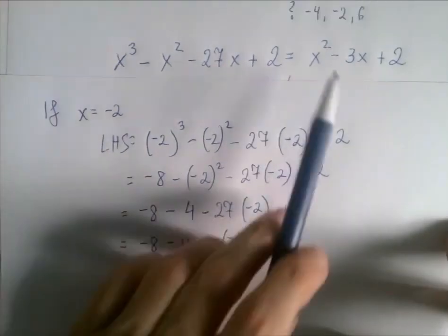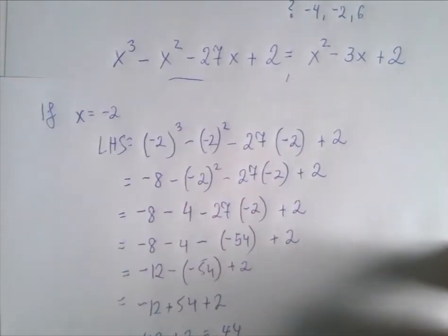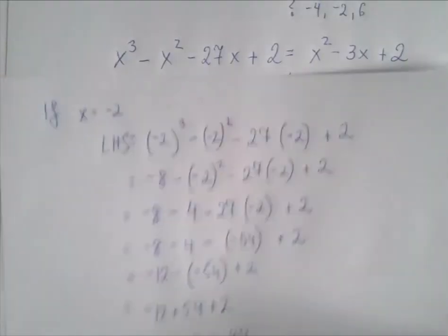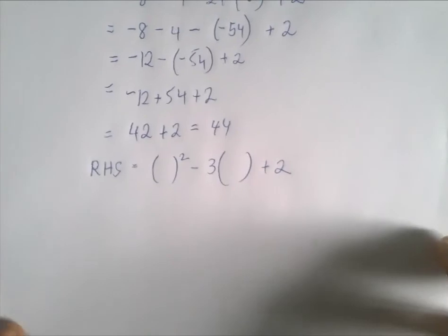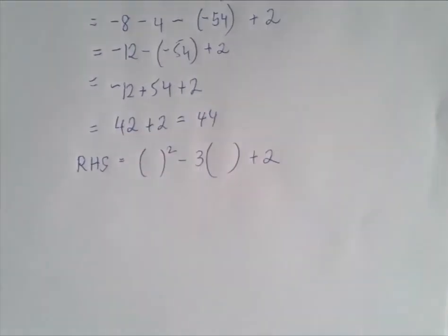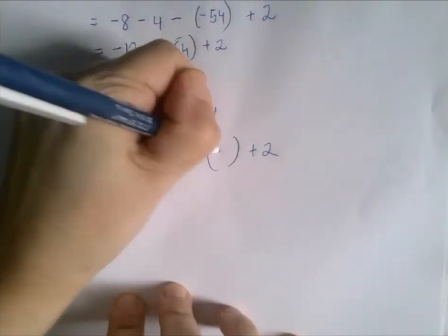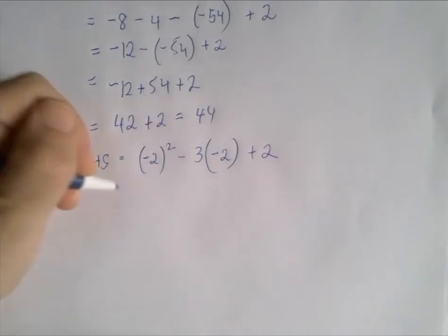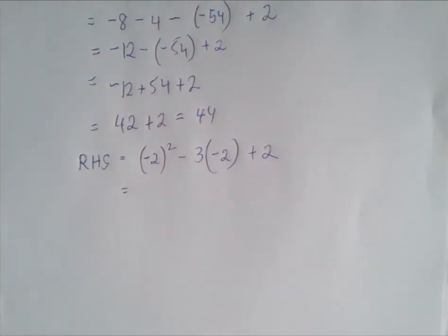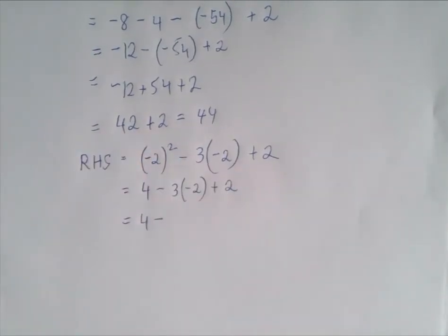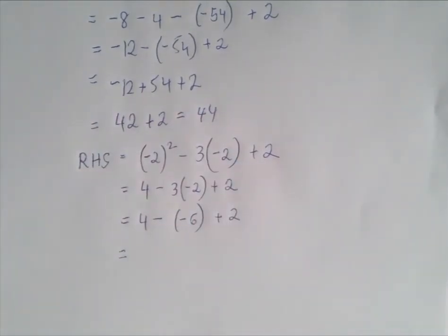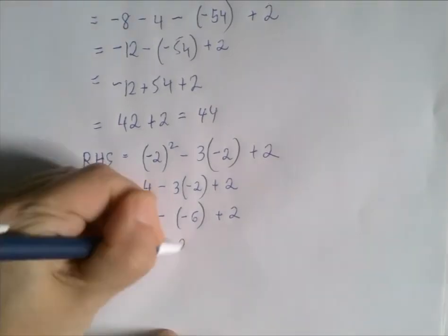Now we're going to evaluate the right-hand side of the same equation using x equals negative 2. The right-hand side was x squared minus 3x plus 2. We replace the variable with parentheses, copy the value in, and reduce to an order of operations problem. The first operation is exponentiation — negative 2 squared is 4. Then there is a multiplication: from 4 we subtract 3 times negative 2, that's negative 6. To subtract is to add the opposite, so 4 plus 6 is 10.